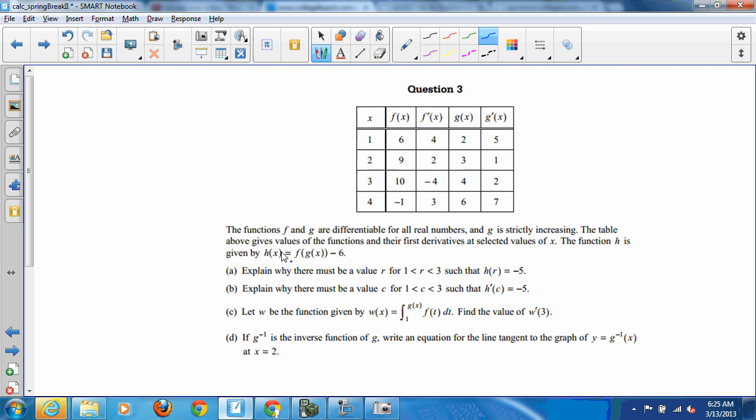The function h is defined by the following: composite f of g of x and then minus 6. So let's go on to part a. Part a says explain why there must be a value between 1 and 3 where h is equal to negative 5.